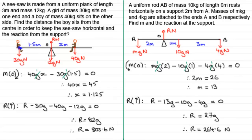So that shows how to tackle questions involving a horizontal beam or plank resting on a single support: take moments about the support to find unknown masses or distances, then resolve vertically to find the reaction force. In the next video, we'll continue with horizontal rods but look at two supports instead of one.